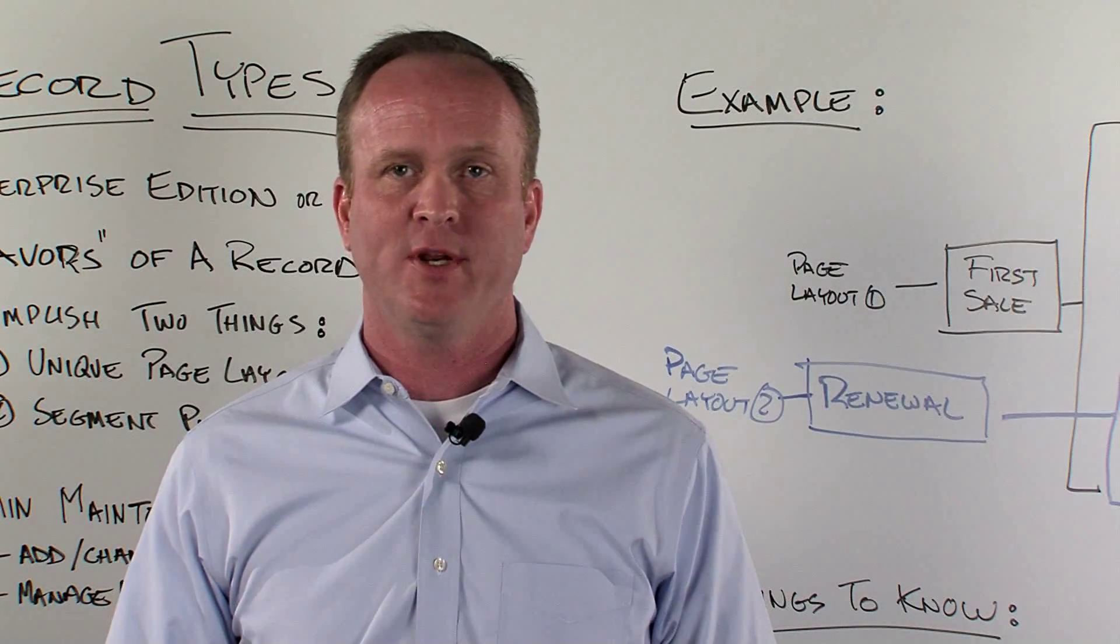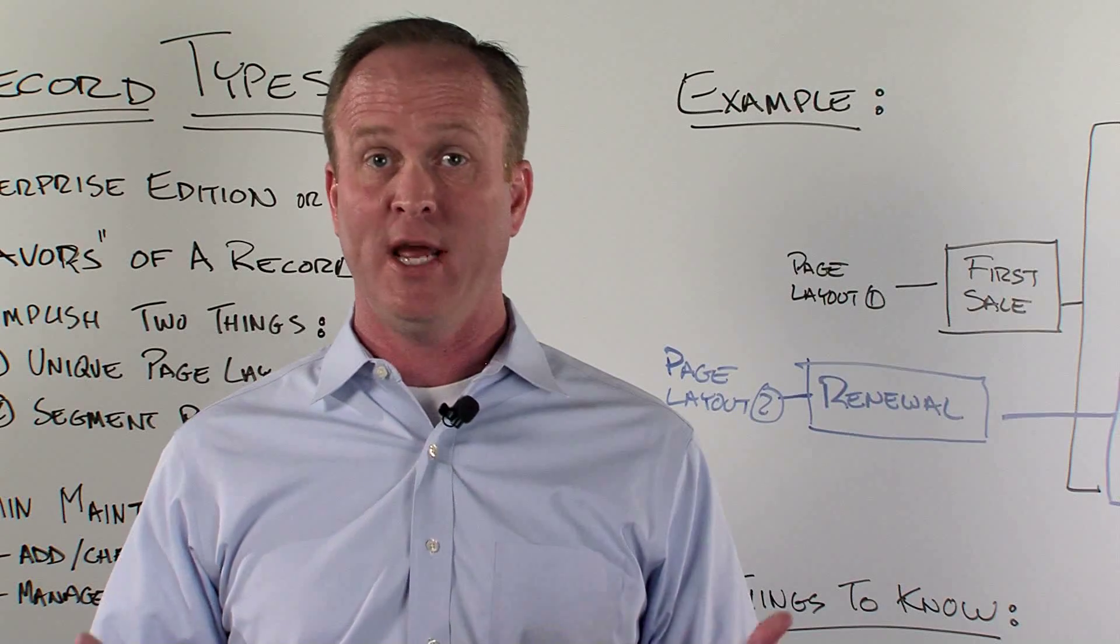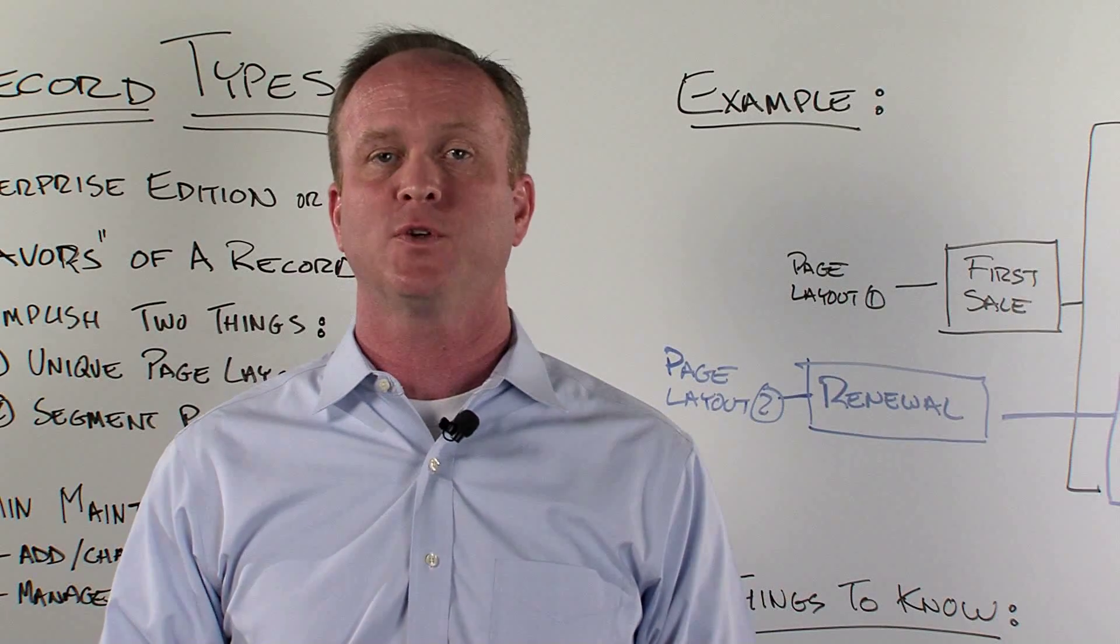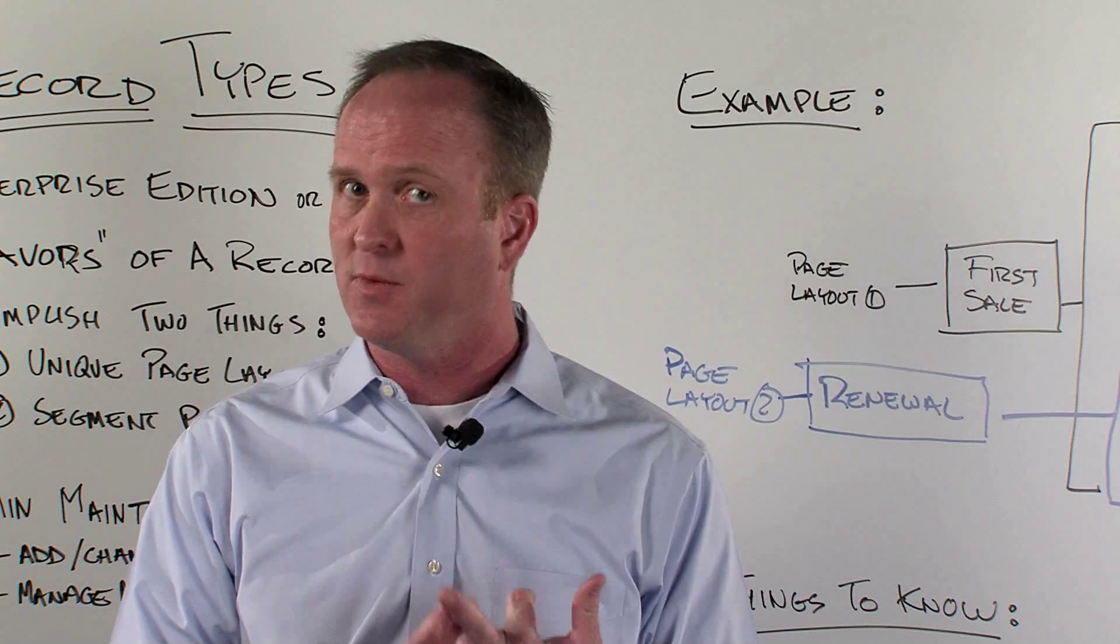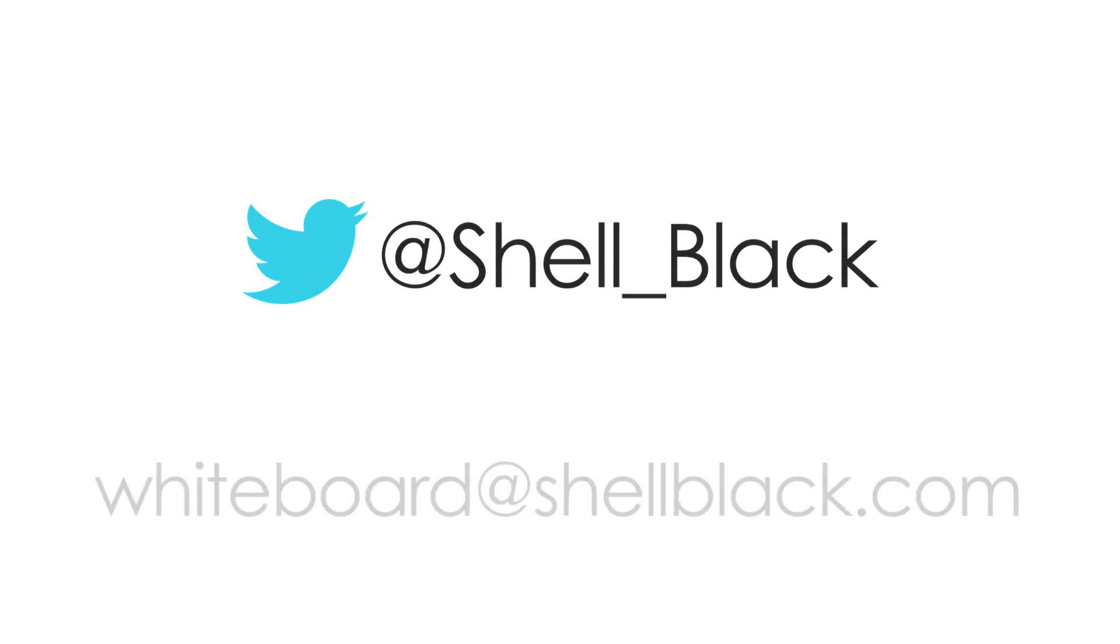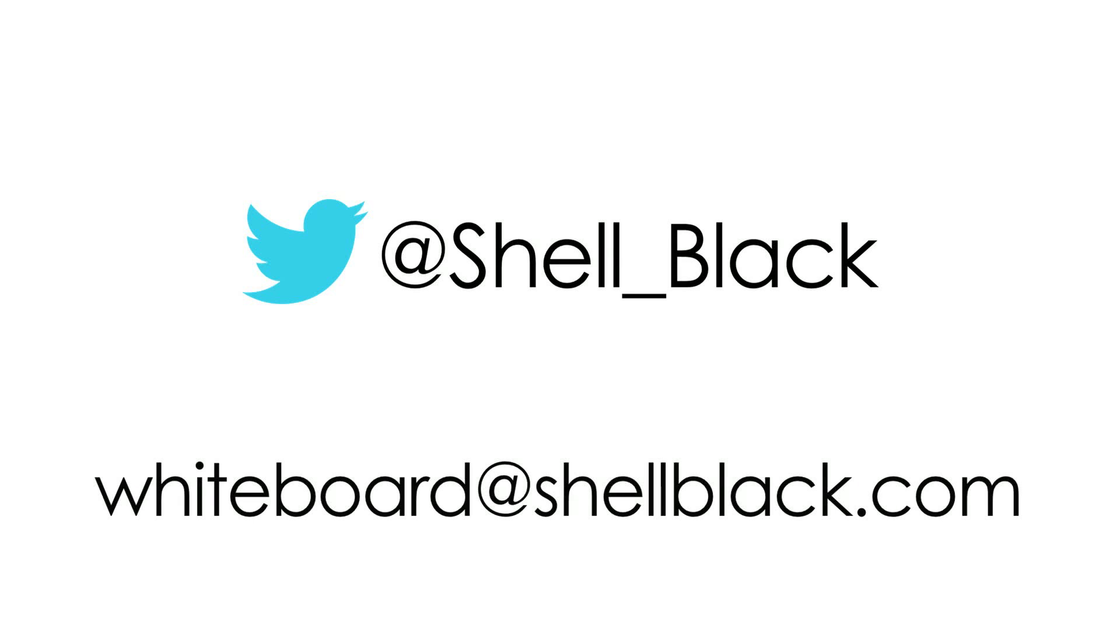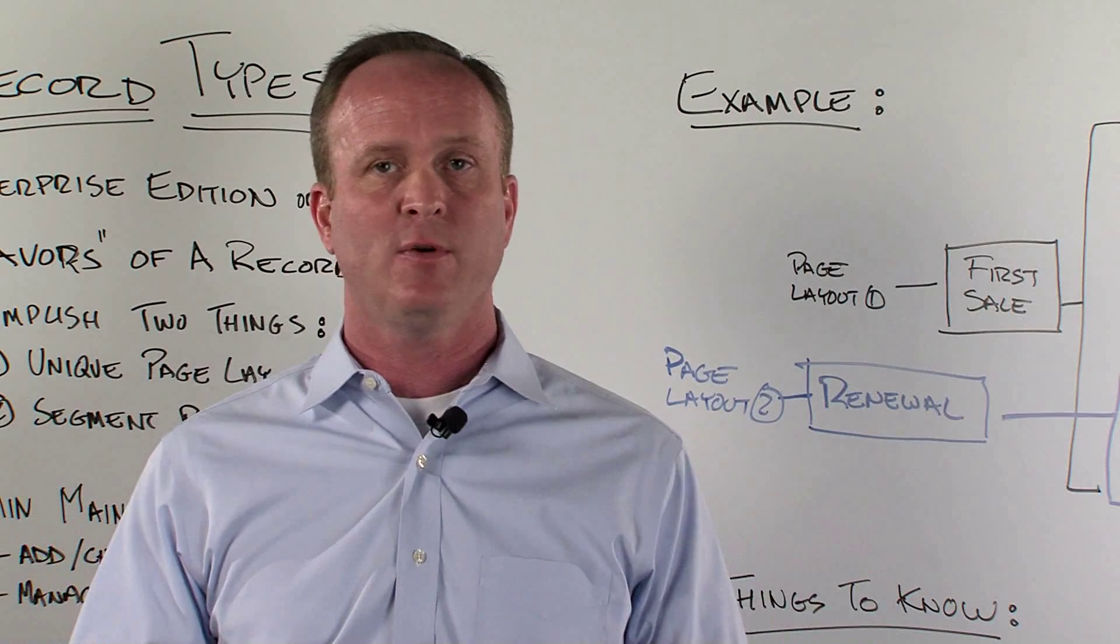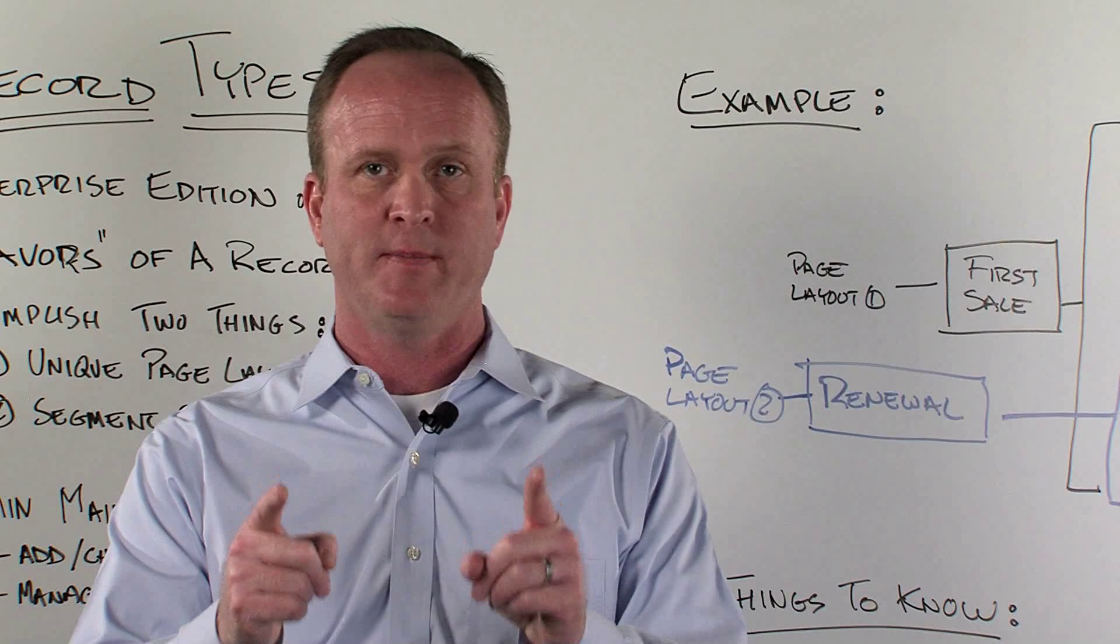Okay, so that wraps up our segment on record types. I hope you enjoyed how to make different flavors of Salesforce records, assign different page layouts, and segment your picklist with record types. We'd love to hear your feedback and how we're doing. You can reach me a couple different ways. I'm out on Twitter at shell_black, and you can also email me at whiteboard at shellblack.com. Thanks so much for tuning in. I hope to see you on another episode.